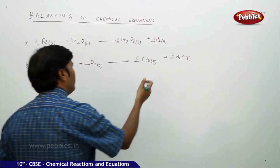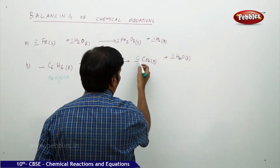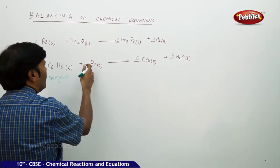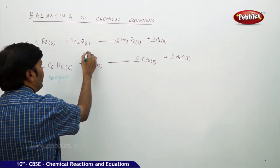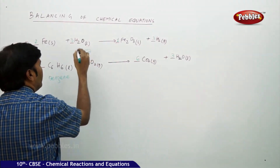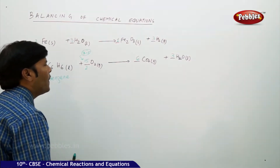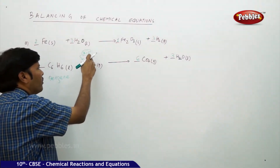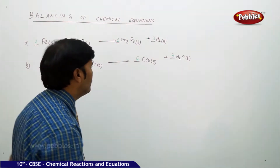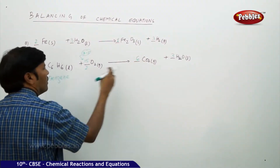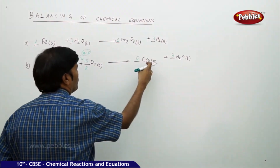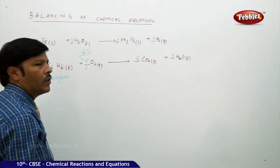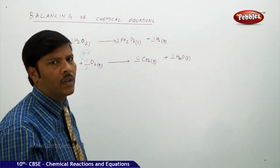Now for oxygens: we have 6 × 2 = 12 oxygens from CO₂ plus 3 oxygens from H₂O, giving 15 oxygens total on the product side. On the reactant side we have only 2 oxygens in O₂, so mark 15/2 (which is 7.5) as the molar coefficient beside O₂. Then 7.5 × 2 = 15 oxygens, everything is balanced. Mark 1 beside benzene and the reaction is balanced.